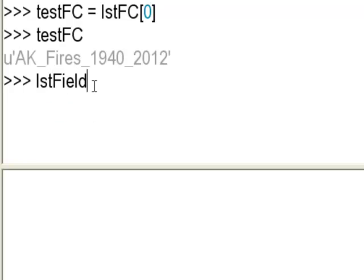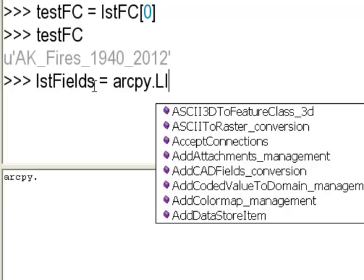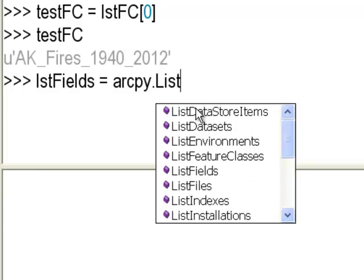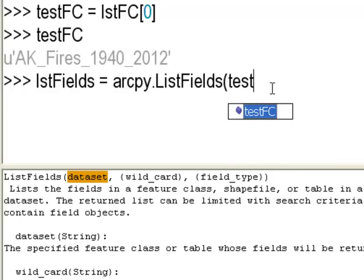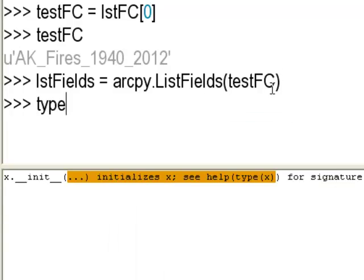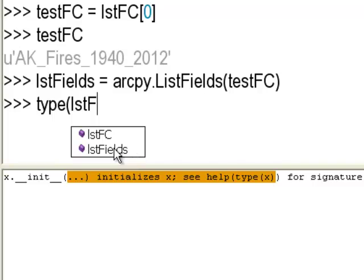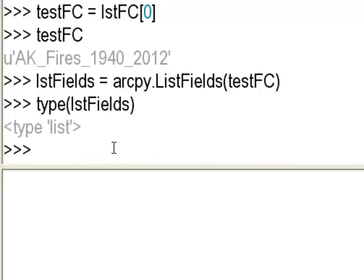We create a list of fields set equal to arcpy.ListFields, which requires a dataset. It's smart enough to list all layers in ArcMap, so we pass in testFC. Checking the type of lstFields shows it is a list, but it contains a list of field objects.